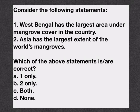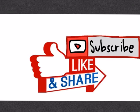Now let us try to solve a question from a prelims perspective. Consider the following statements: one — West Bengal has the largest area under mangrove cover in the whole country; two — Asia has the largest extent of the world's mangroves. Which of the above statements is or are correct? You can comment your answers below. Since today's video was full of facts, it is better to note down these facts and revise again and again. That's it for today, thank you.